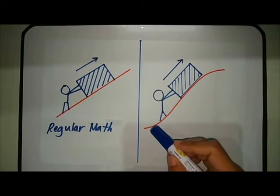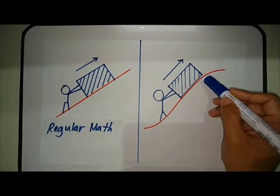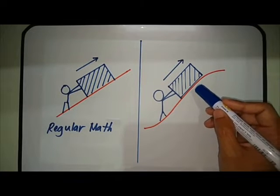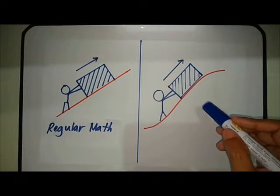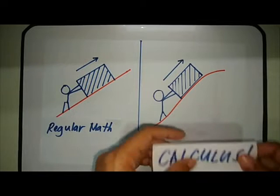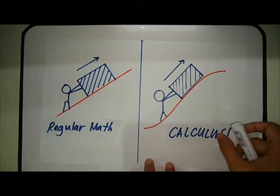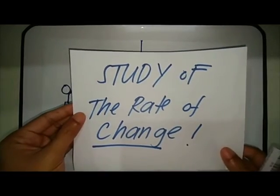For the curving incline on the other hand, things are constantly changing. As a result, the amount of energy expended is constantly changing. Not just every second, a thousand of a second but constantly, from one moment to the next. That's what makes it a calculus problem. That is also why calculus is called the study of the rate of change.